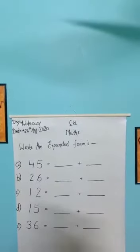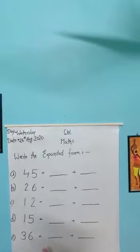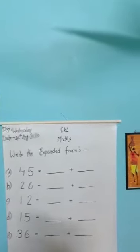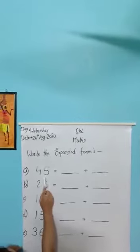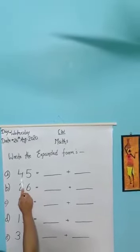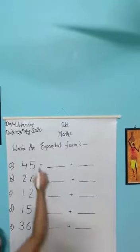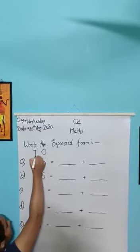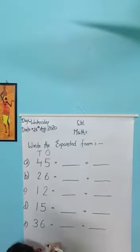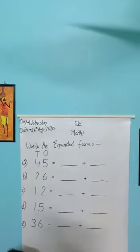Aaj hum log write karenge expanded form. Matlab, numbers ko bada karke likhna, unki value batake likhna. Jaise yahan pe likha hai, forty-five. Kya hai beta, forty-five. Five ki value batani hai, aur four ki value. Five aapka ones pe hai, aur four aapka tens pe hai. So, yahan pe, forty-five ko kis tarah se define karna hai, woh batana hai.